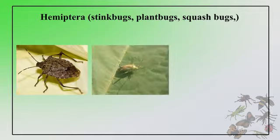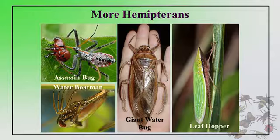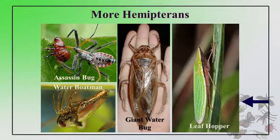Next comes Hemipteran insects; they are commonly called stink bugs, plant bugs, and squash bugs. They actually suck the cell sap from the plant body using their proboscis or modified mouth parts. Examples include the assassin bug, giant water bug, leaf hopper, and water boatman.